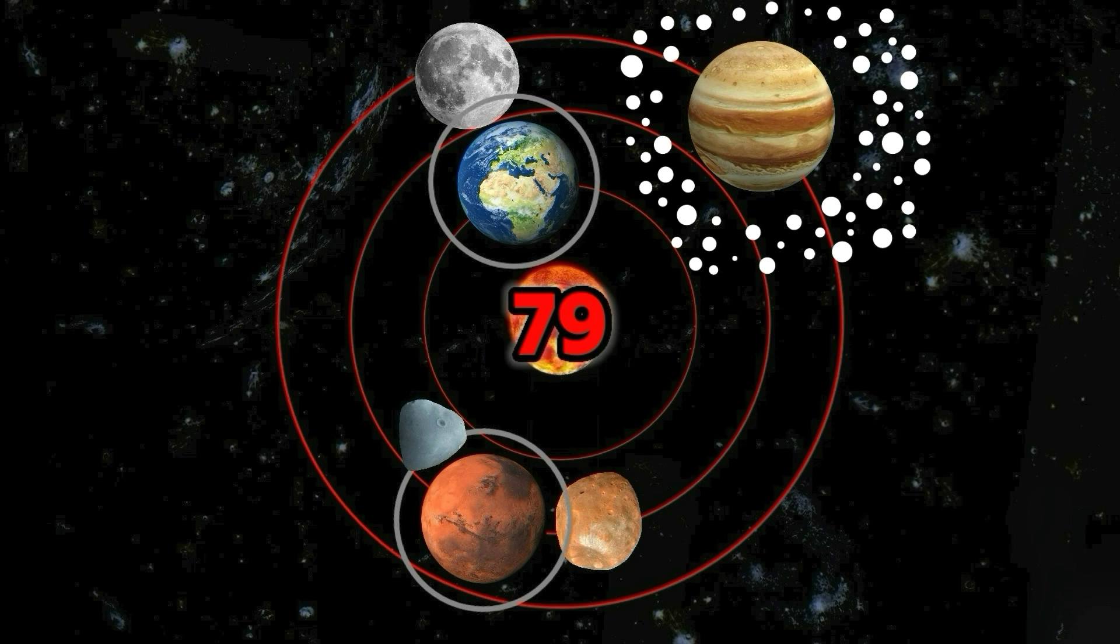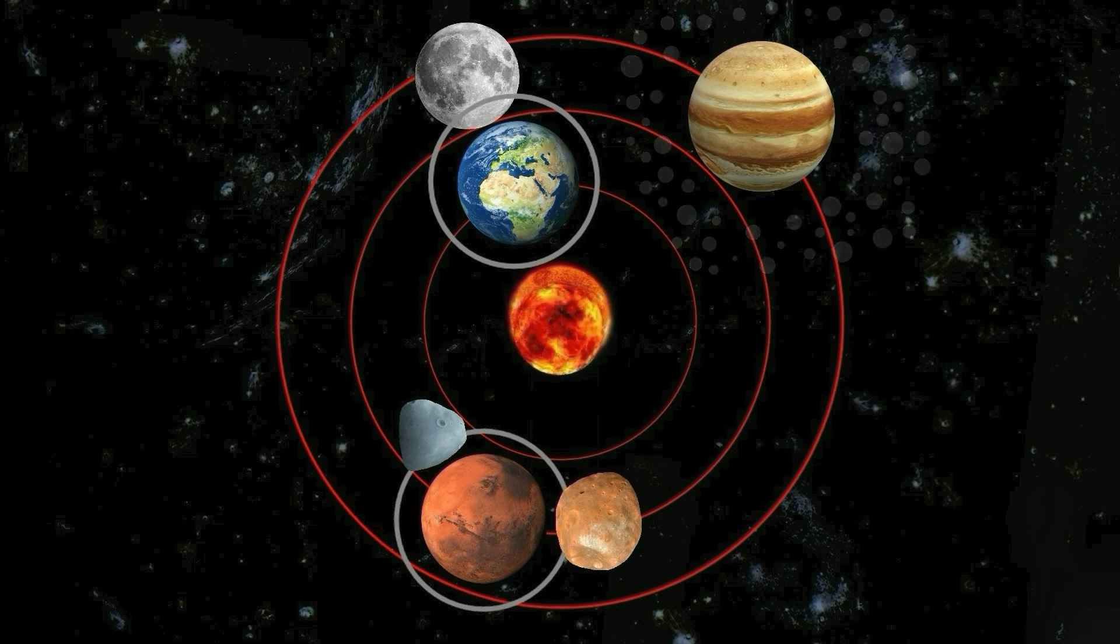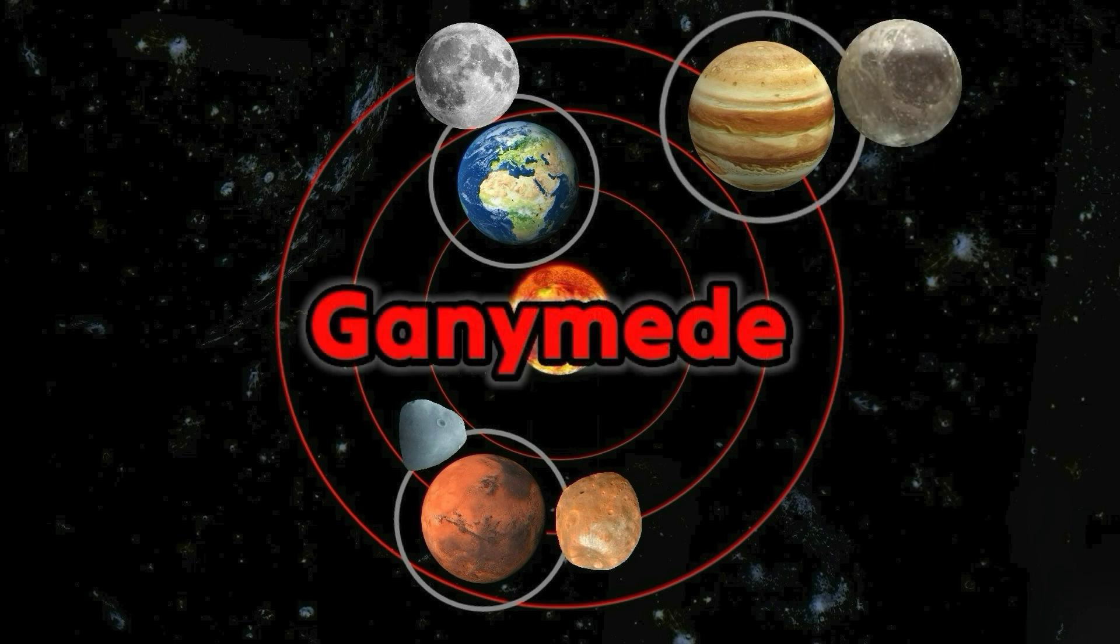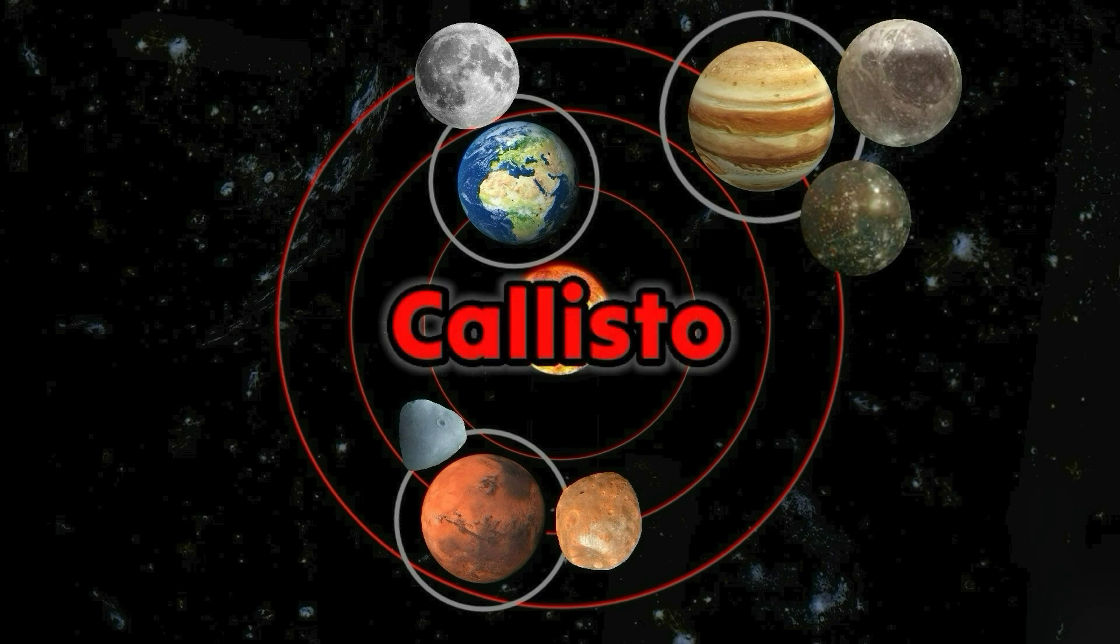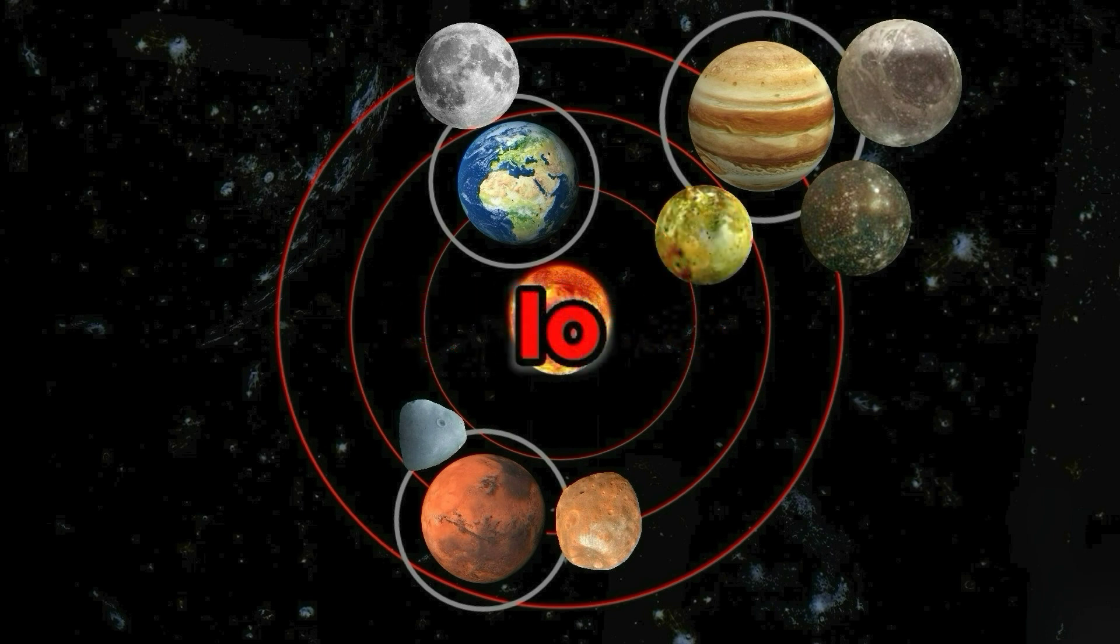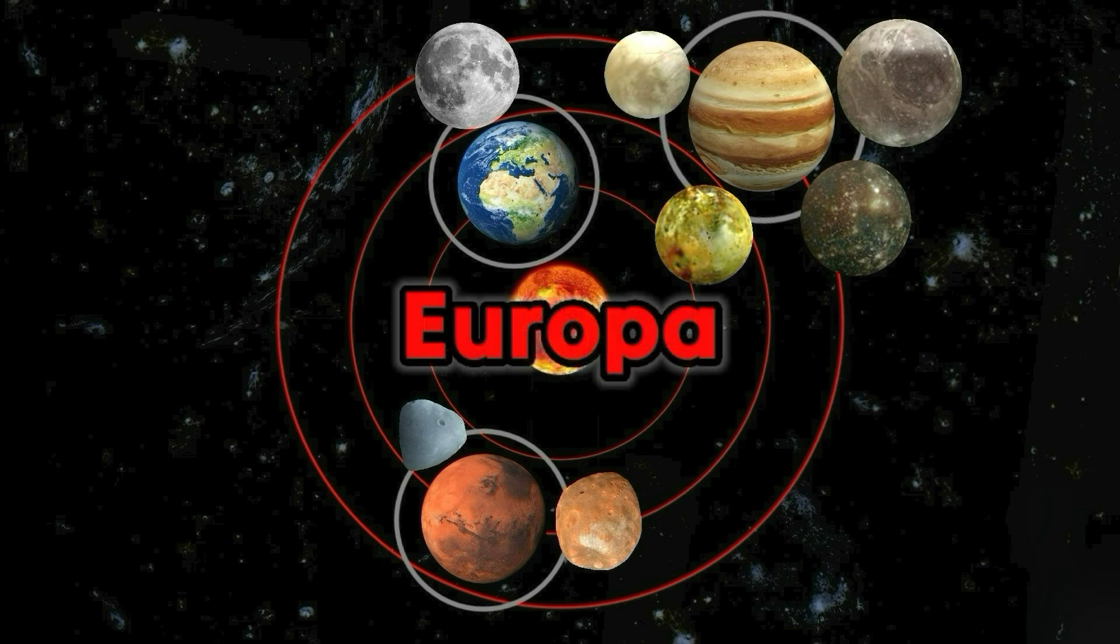Jupiter has 79 moons: Ganymede, Callisto, Io, Europa.